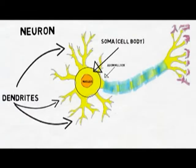If the signal coming from the dendrites is strong enough, then a signal is sent to the next part of the neuron, which is called the axon.